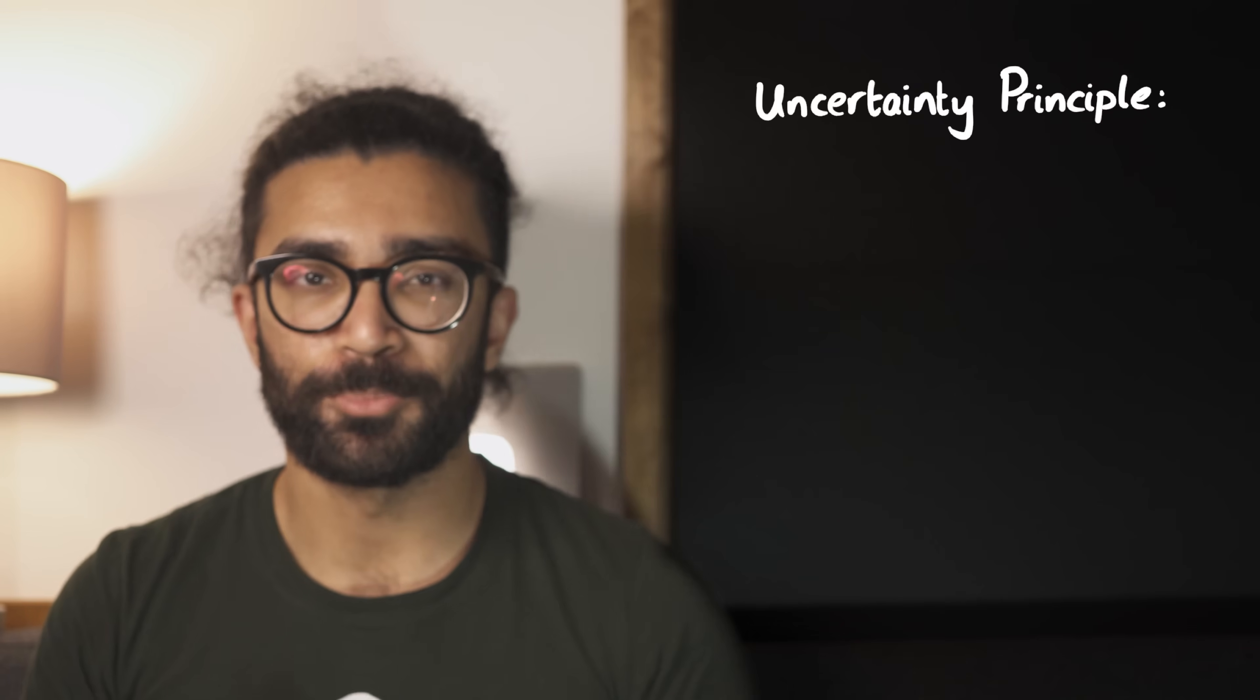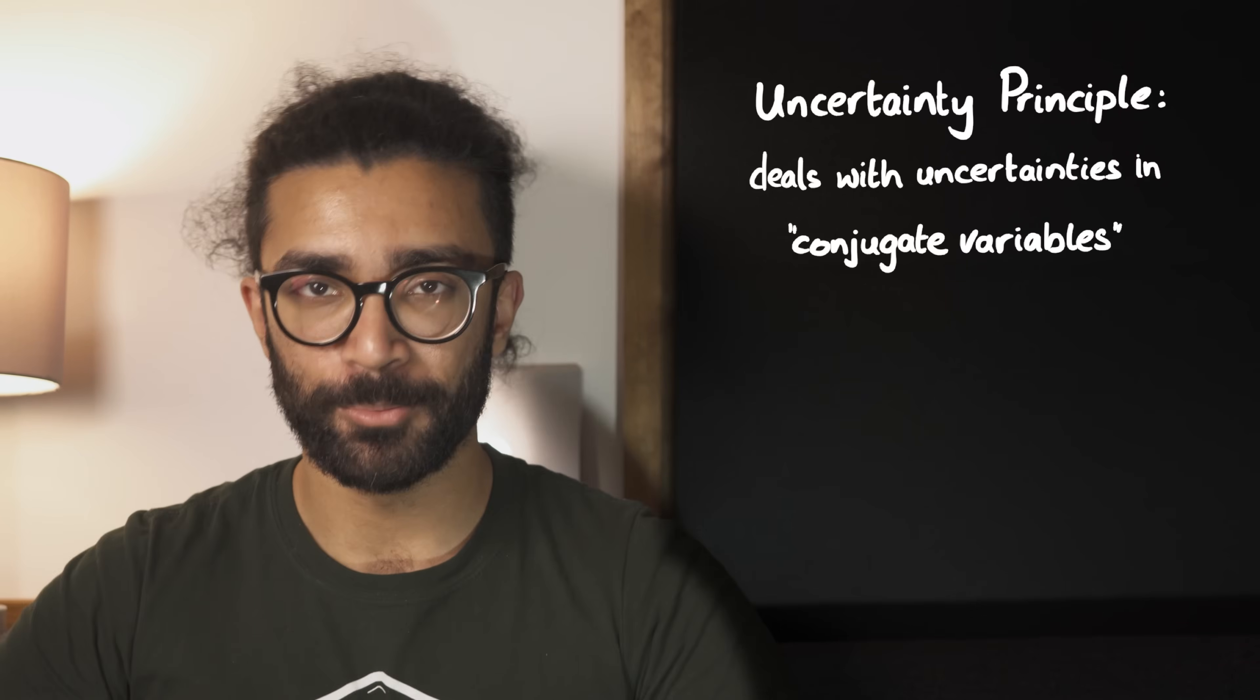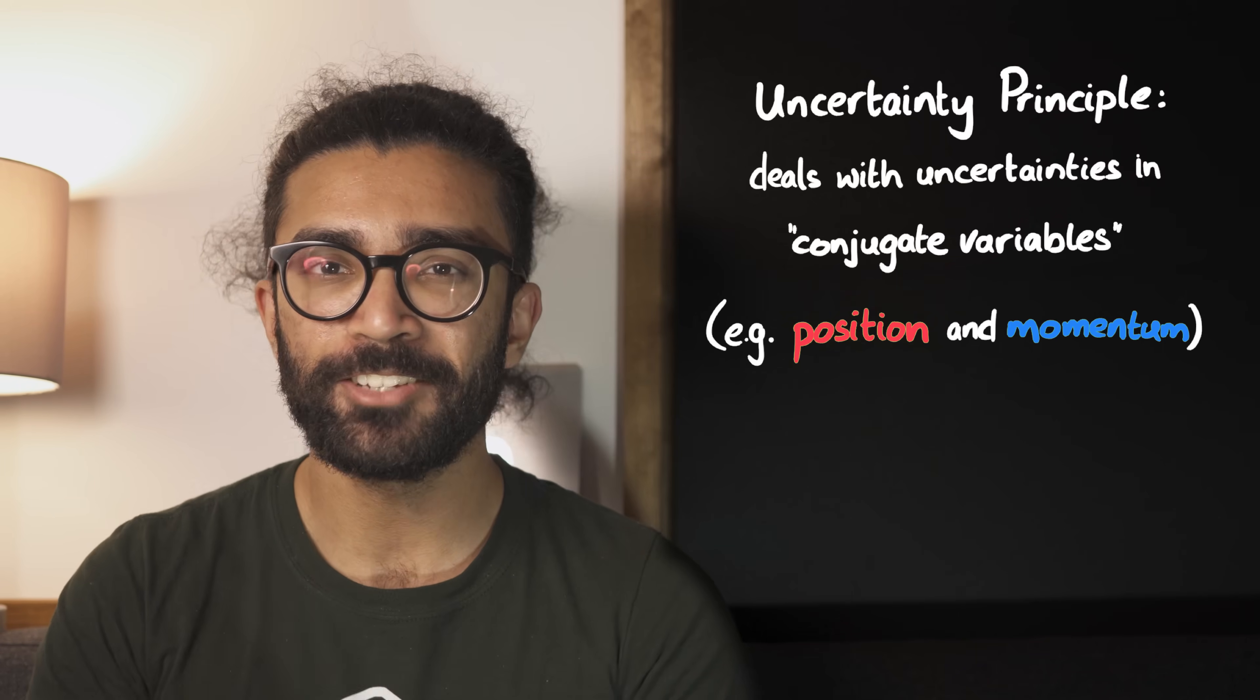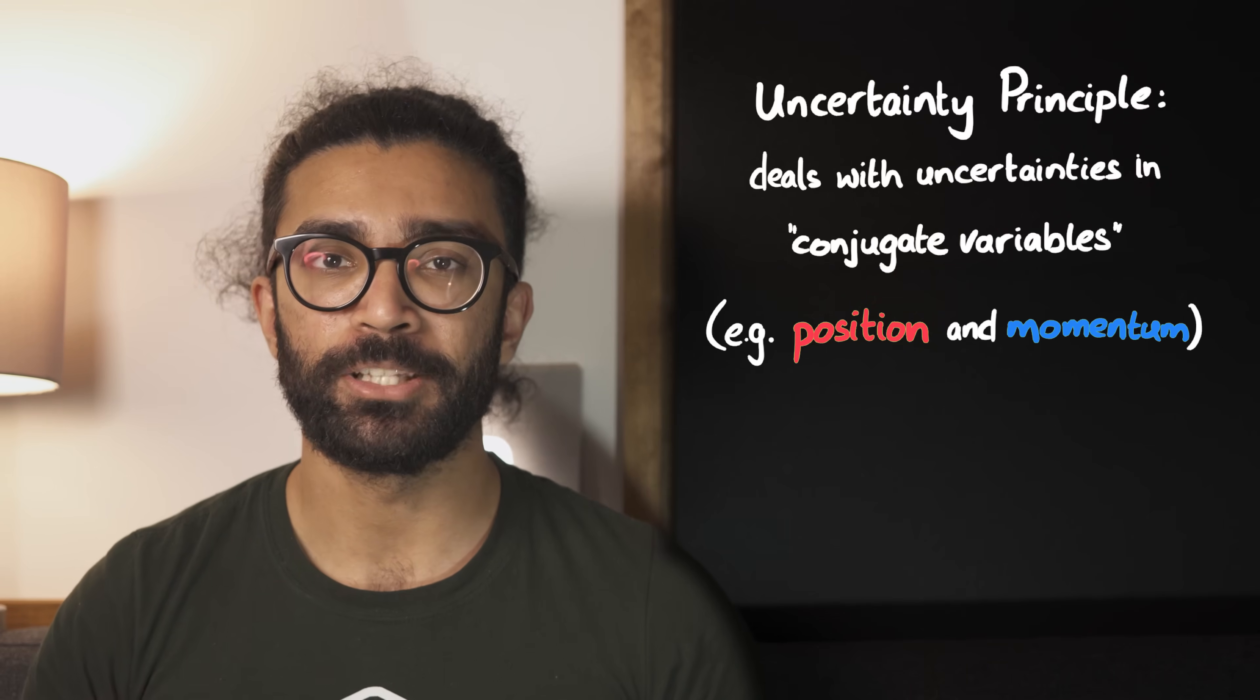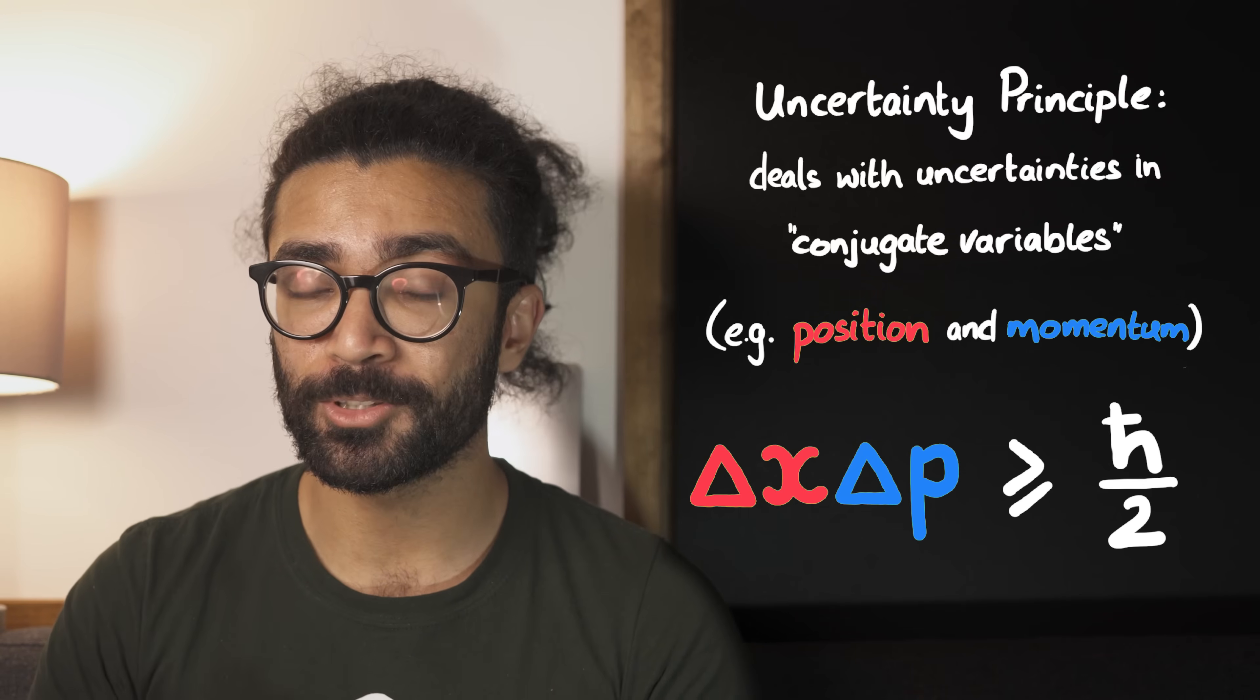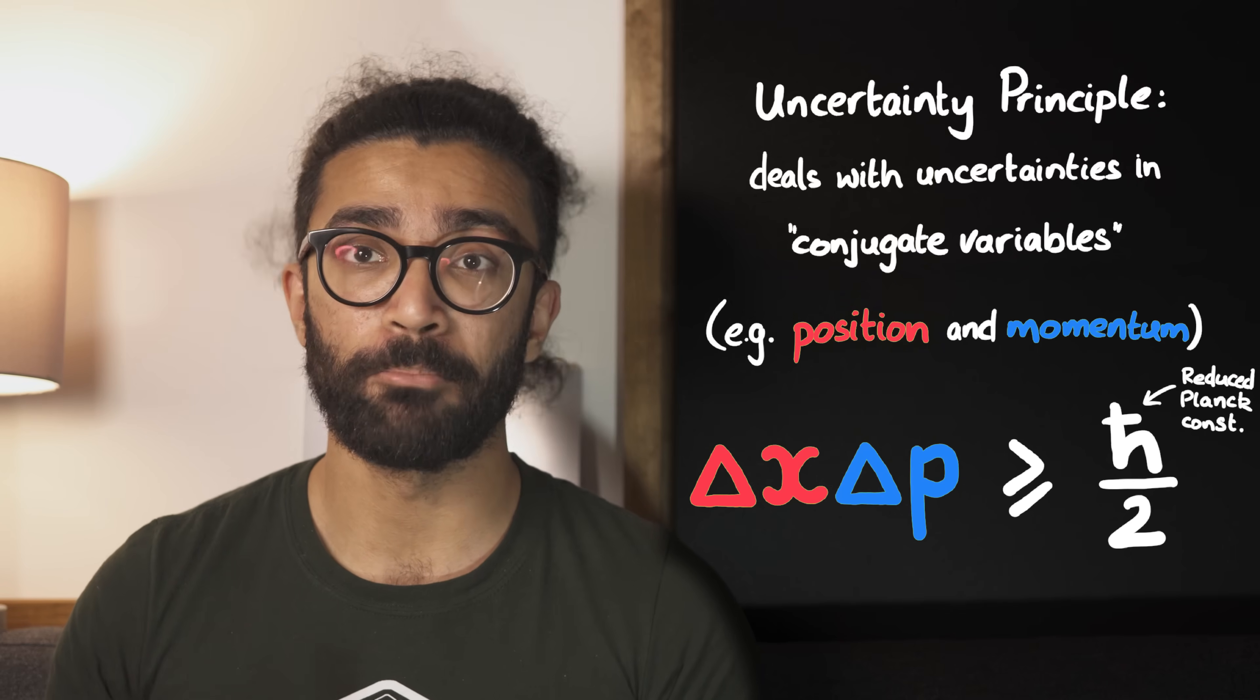Now the uncertainty principle deals with the uncertainties in two measurements that are related to each other, or in other words are known as conjugate variables. The most common example of this is position and momentum of a particle along the same direction. These two quantities are conjugate variables and when we measure them, their uncertainties must obey the uncertainty principle. When we multiply these two uncertainties together, the result is always greater than or equal to h-bar divided by 4. h-bar is the reduced Planck constant, which for our purposes right now is just a constant or a number.